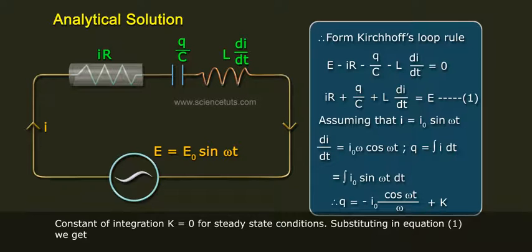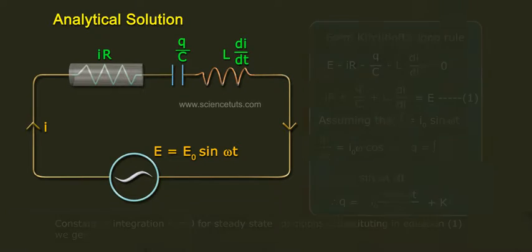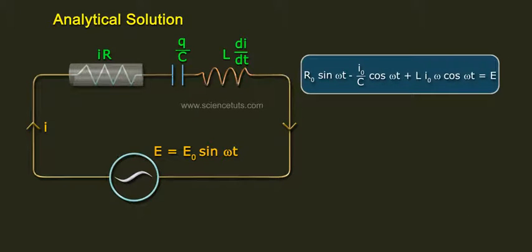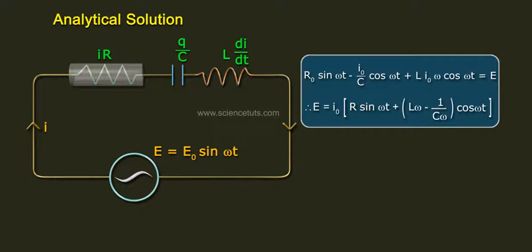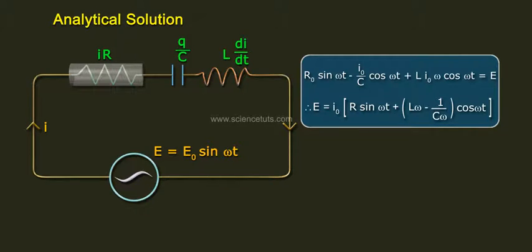Setting K = 0 for steady-state conditions and substituting into Equation 1, we get: I0·R·sin(ωt) − I0/(Cω)·cos(ωt) + L·I0·ω·cos(ωt) = E. Therefore E = I0 [R·sin(ωt) + (Lω − 1/Cω)·cos(ωt)].